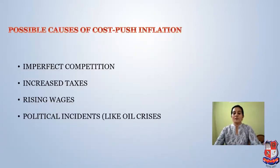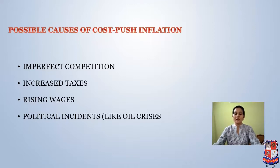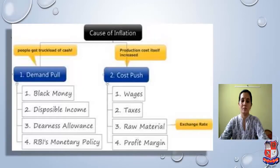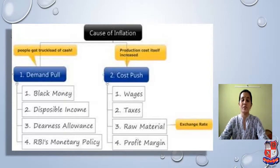Possible causes of cost-push inflation include imperfect competition, increased taxes, rising wages, and political incidents like the oil crisis. The main causes of demand-pull inflation are black money, disposable income, dearness allowances, and RBI monetary policies. Whereas wages, taxes, raw materials, and profit margins are some causes of cost-push inflation.